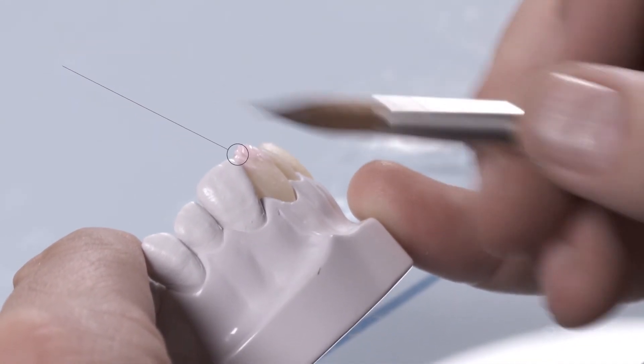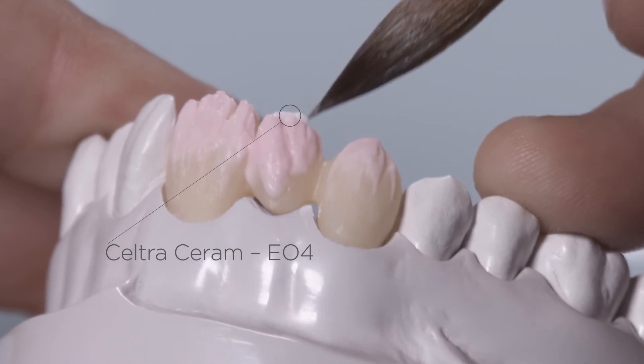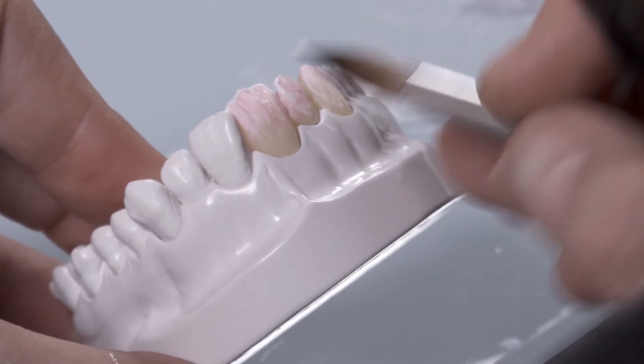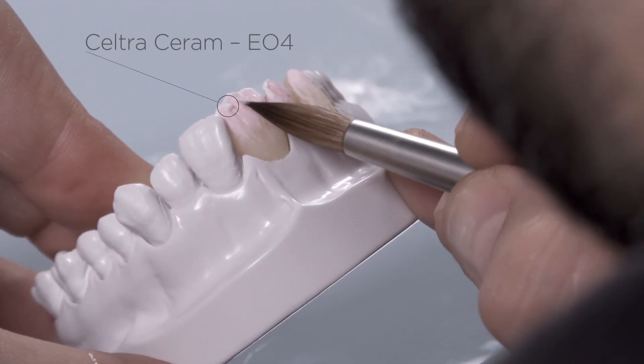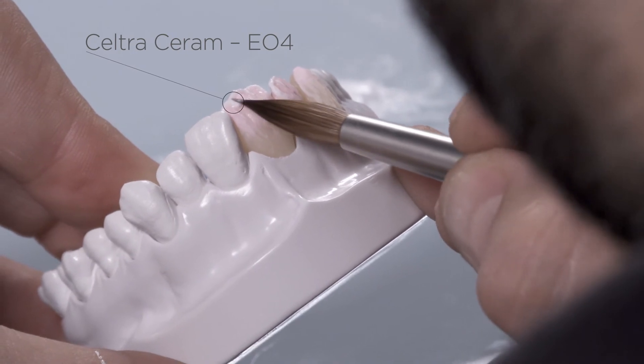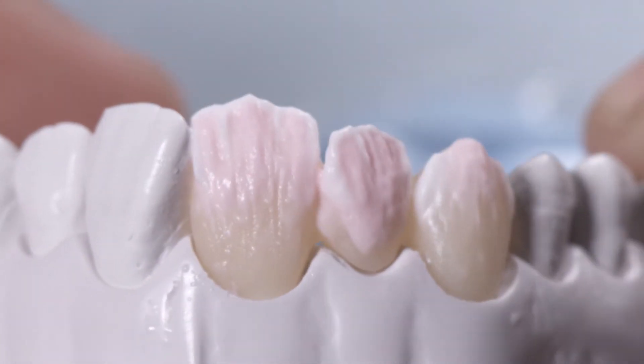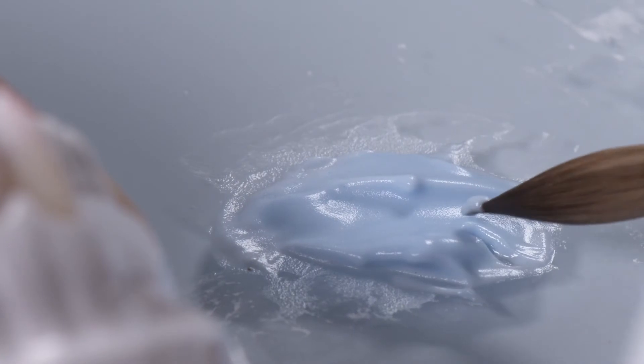Highlight the incisal edge with Enamel Opal EO4. Emphasize the areas between the mamlons and on the incisal ridges with EO4 for more depth effect. Then complete the build-up of the restoration with Enamel E1.